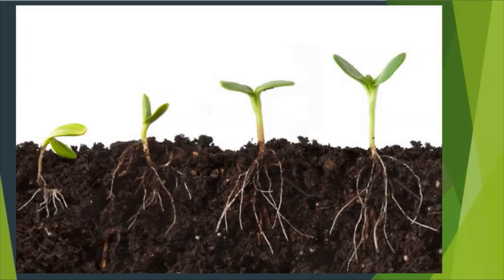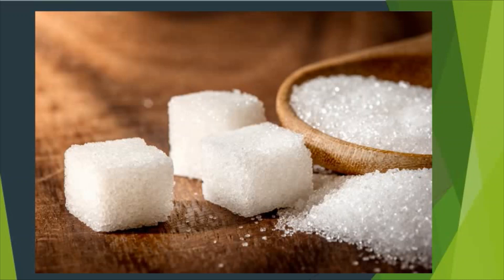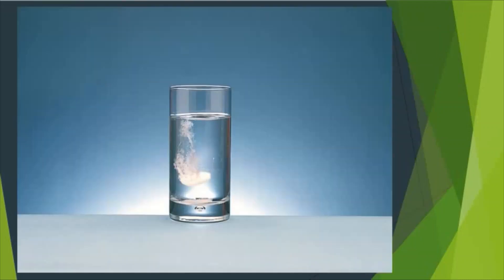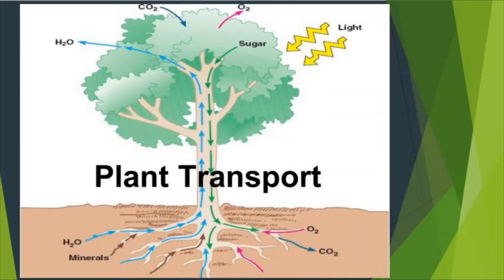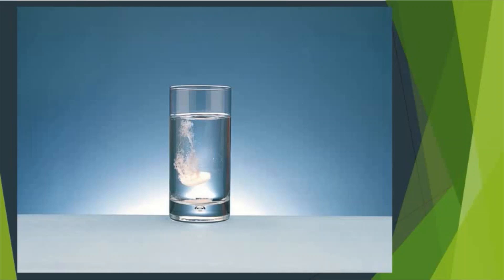The water is used in photosynthesis for making glucose using carbon dioxide and energy from the Sun. Water is also an important liquid because it acts as a solvent, transporting chemicals up and down the stems to the leaves, to the roots, to the flowers, and to the growing shoots at the tip of the plant. There are also some important elements dissolved in the water that plants need to stay alive and grow big and strong.